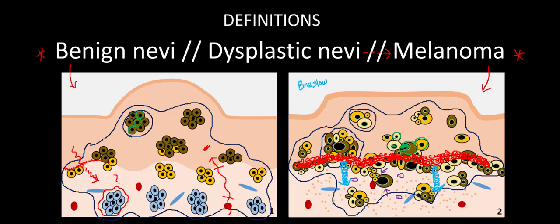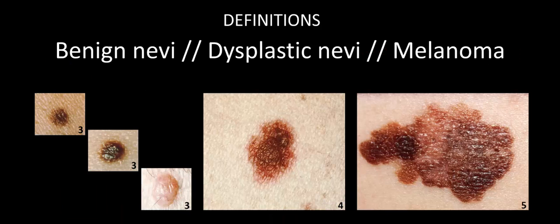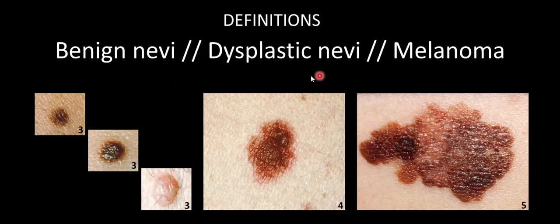Now that we've gone over the big picture histological distinctions, let's look at their clinical appearances. In this slide, I have clinical images for three types of benign nevi, a dysplastic nevus in the center, and a malignant melanoma at the far right. In the next video, we'll go over some specific criteria to better distinguish benign nevi from dysplastic nevi and melanoma. But in the rest of this video, I just want to go over in broad strokes the gross differences among these lesions.